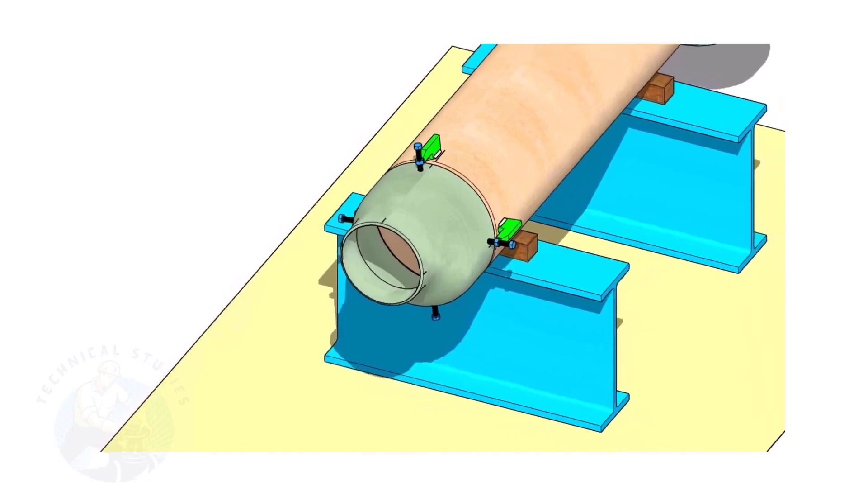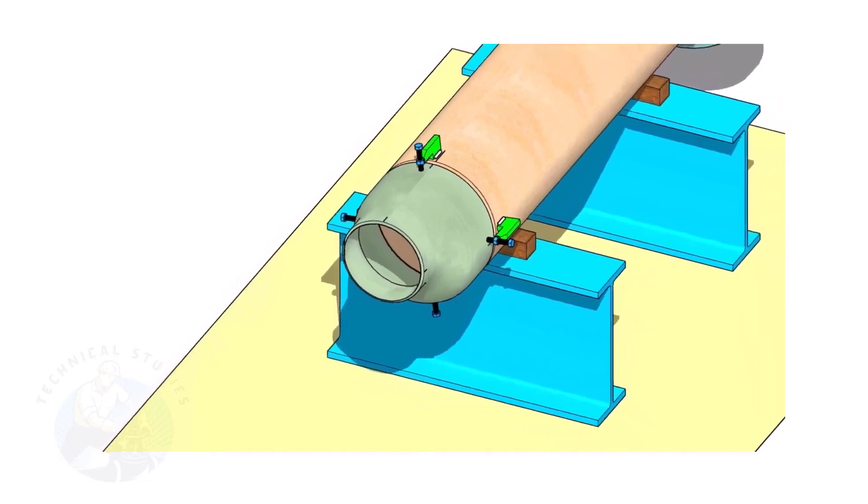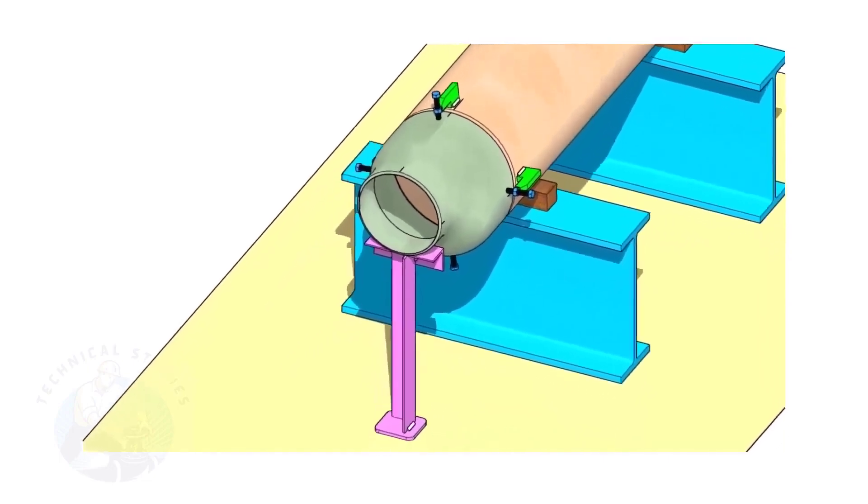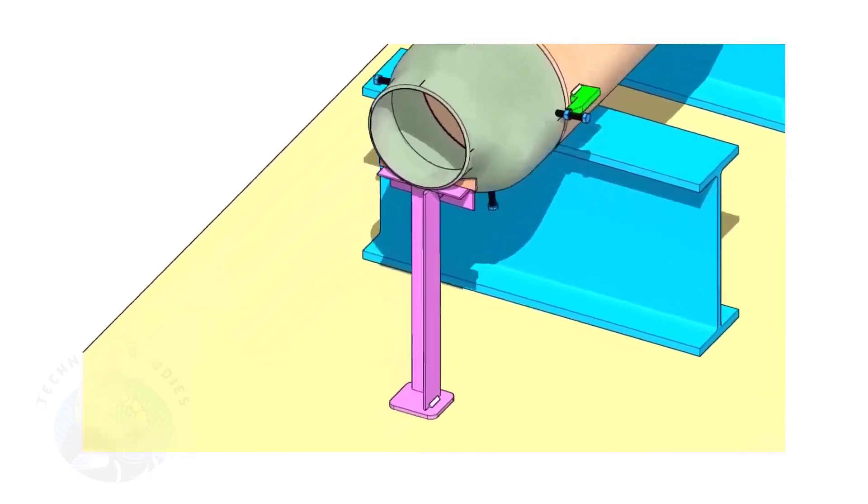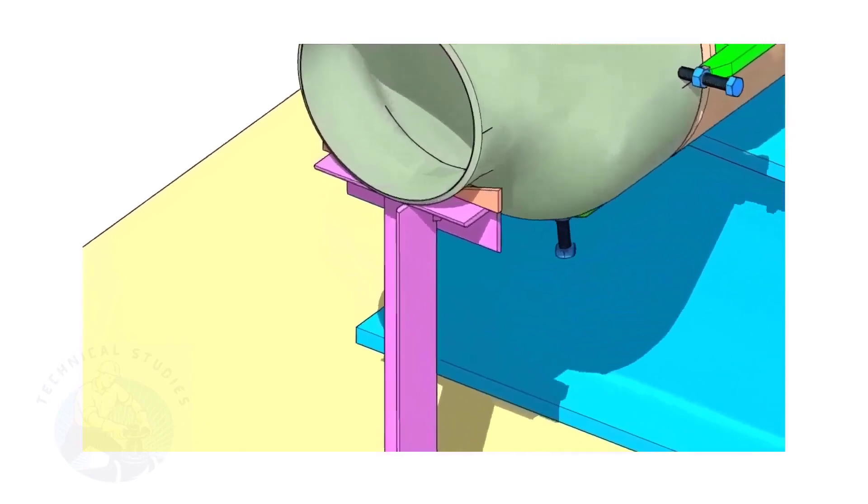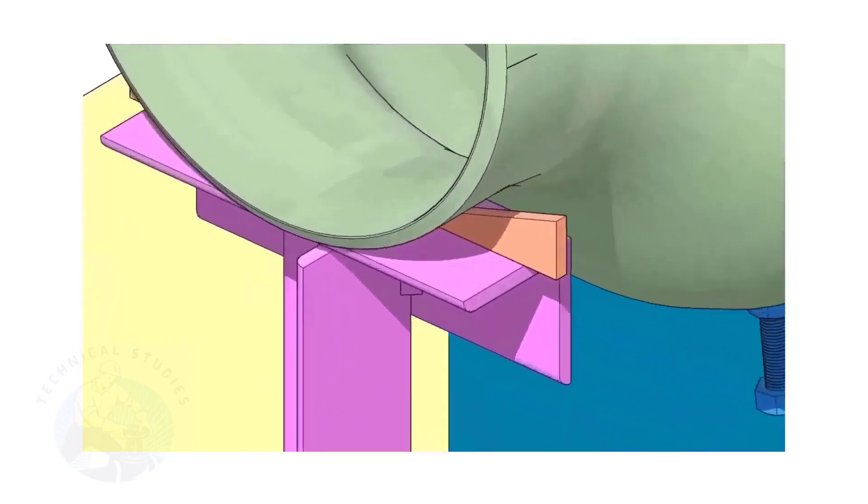Put the reducer in the clamps. Slightly tighten the bolts. Arrange proper supports below the reducer. The height of the support shall be adjustable. Here, I used simple wedges.